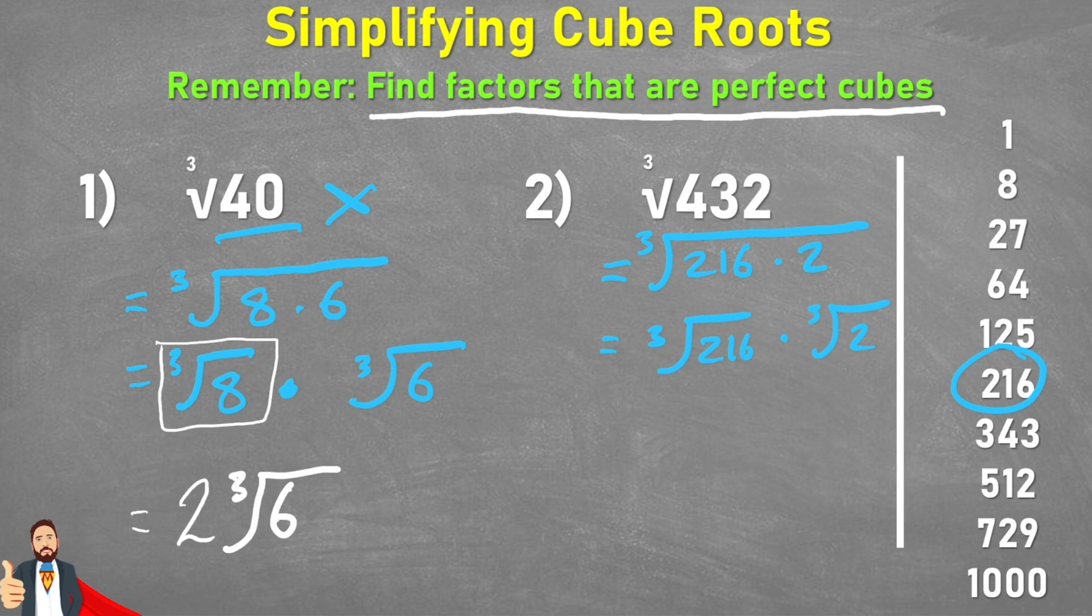And we can now begin to simplify because the cube root of 216 is 6. 6 times 6 is 36, times 6 is 216. So therefore the cube root of 216 is 6. And we can't simplify the 2 any further. So we'd have to say multiplied by the cube root of 2. And that is now our simplified form.